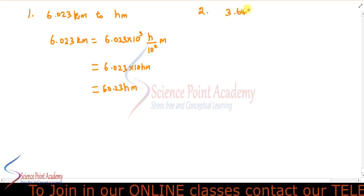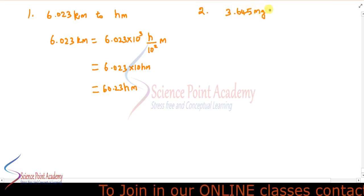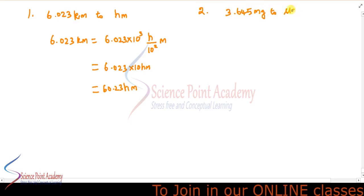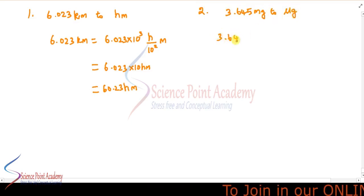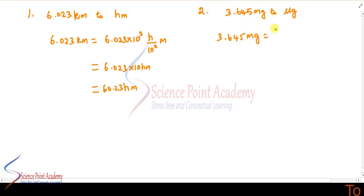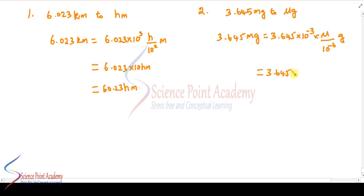One more example: convert 3.645 milligrams to micrograms. Milligram — give its numerical value 10 power minus 3. Bring micro, whose value is 10 power minus 6. So 3.645 × (10⁻³ / 10⁻⁶) = 3.645 × 10³ micrograms.